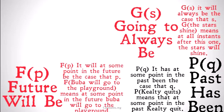P(q), it has at some point in the past been the case that q. P, Kelty quits, means that at some point in the past Kelty quit. So there is some instant in the past where q is true.